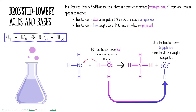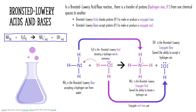We call it the conjugate base because now this hydroxide polyatomic ion has the ability to accept a hydrogen ion — it can be a hydrogen ion acceptor, which is the definition of a base. But it's the result of water transferring its proton, so we call it the conjugate base. This hydroxide and water form a conjugate acid-base pair. The Bronsted-Lowry acid is always paired with the conjugate base, which is just what's left over after that acid got rid of its hydrogen. Now, ammonia is the hydrogen ion acceptor — it took that hydrogen from water — so ammonia is our Bronsted-Lowry base.